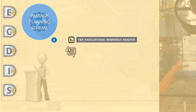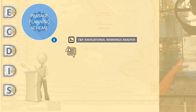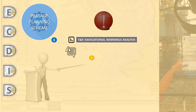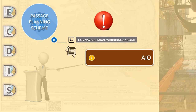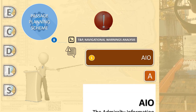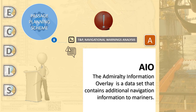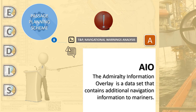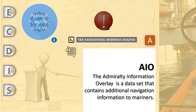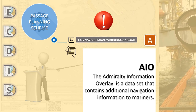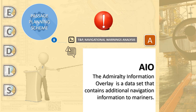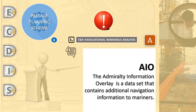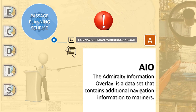The Admiralty Information Overlay (AIO) is a dataset that contains additional navigation information for mariners. The AIO is designed to be displayed over top of electronic navigation charts on an Aegis display screen and is unique only to Admiralty ENCs.